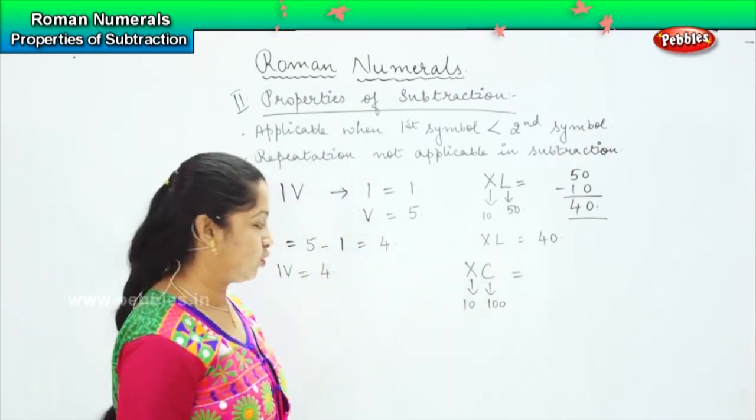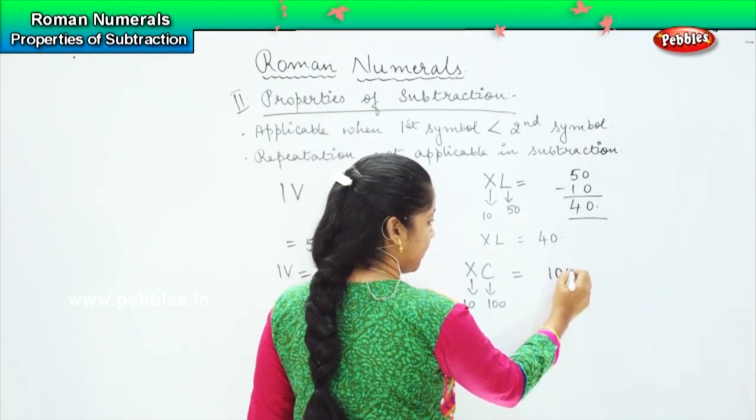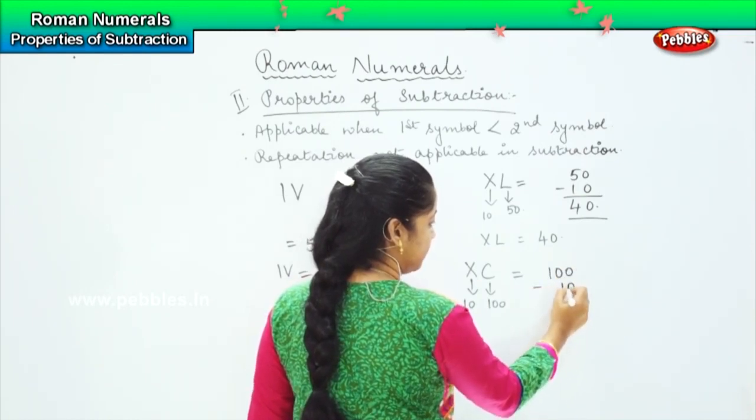So the smaller symbol is before the largest symbol, so the answer will be 100 minus 10 equals 90. So the value of XC is 90.